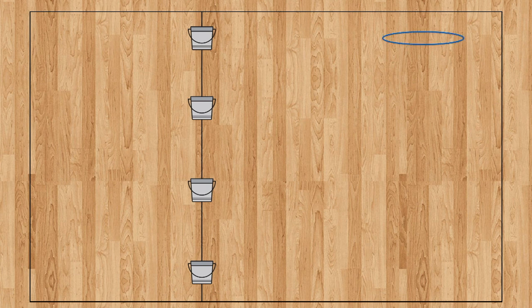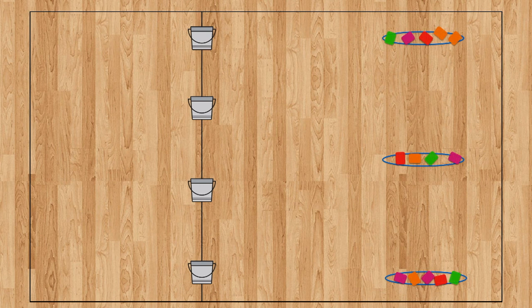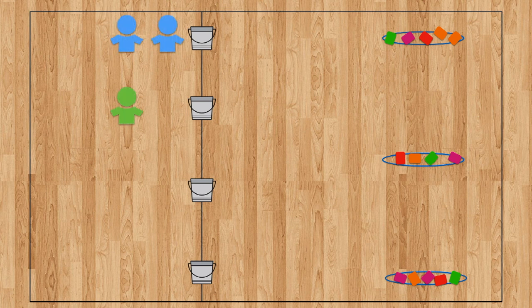Next, spread your hula hoops out and add in the bean bags. They don't have to be even, just divide them up as best as you can. The hula hoops will represent the treasure chest and the bean bags will represent the treasure inside. The last thing you need to do is divide your class into four to six different teams and have them stand behind a bucket.